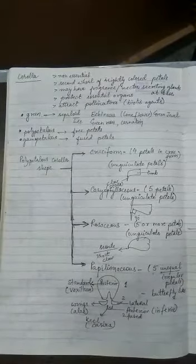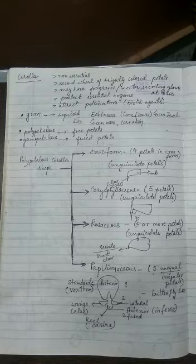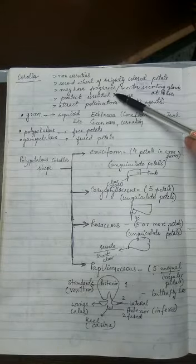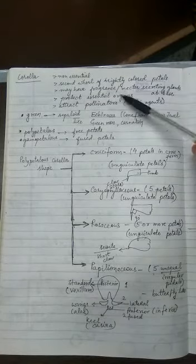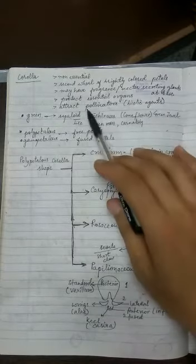Now the corolla is also the non-essential part. So that means they are not directly involved in the sexual reproduction. But they may assist in the process of attracting the insects and all. Because corolla is basically fragrant or otherwise nectar secreting. So there would be glands which are responsible for attracting the insects.